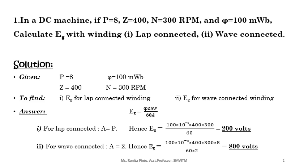We already know the generated EMF EG is given by EG = ΦZnP divided by 60A. The only difference when calculating generated EMF for lap connected versus wave connected is: for lap connected, A equals the number of poles P; whereas for wave connected, A equals 2. So substitute A = P and A = 2 in the main equation.